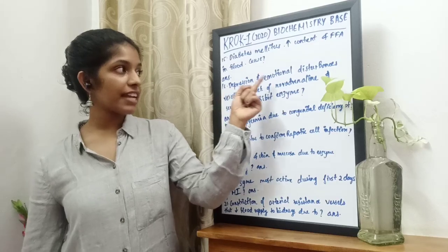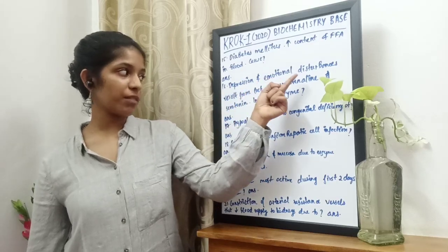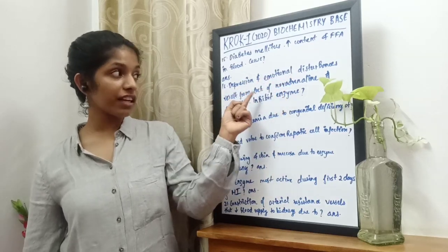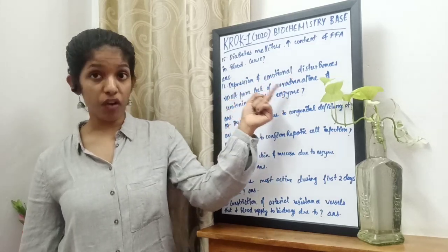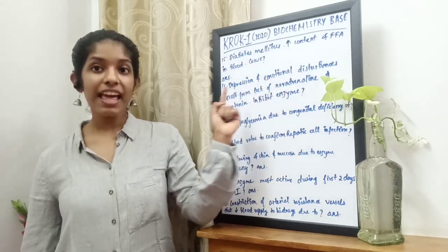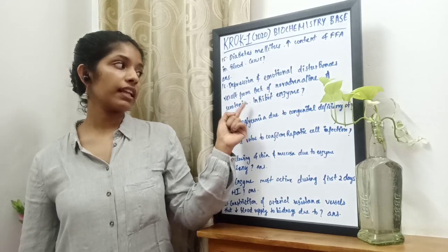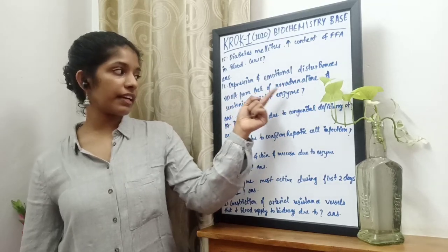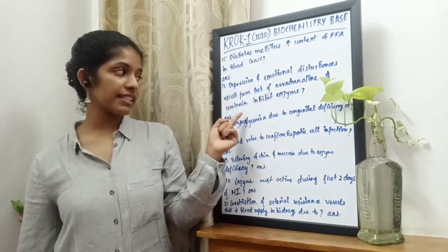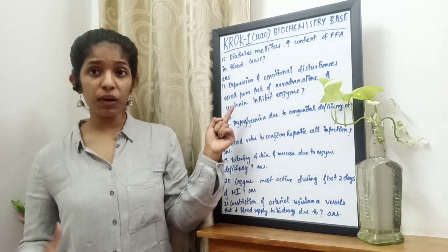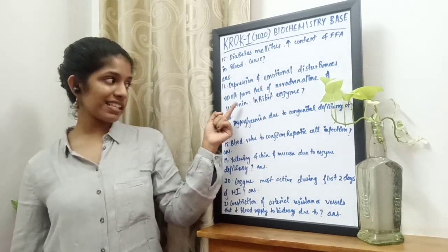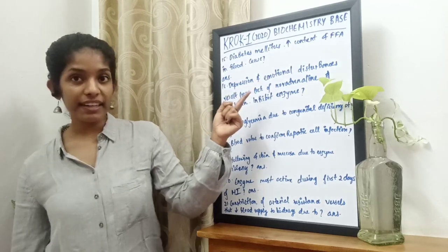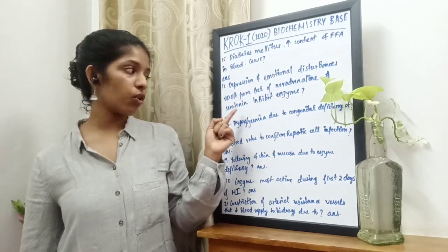Next question: a patient has depression and emotional disturbances resulting from lack of noradrenaline and serotonin. The inhibiting enzymes for noradrenaline and serotonin are the ones that metabolize noradrenaline and serotonin — monoamine oxidase (MAO) inhibitors.